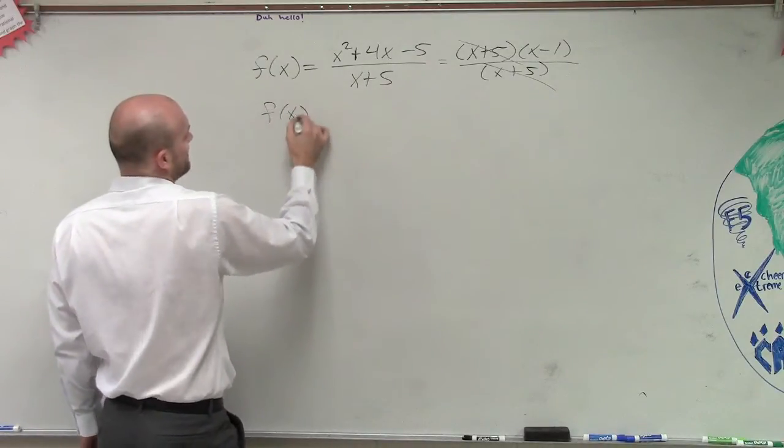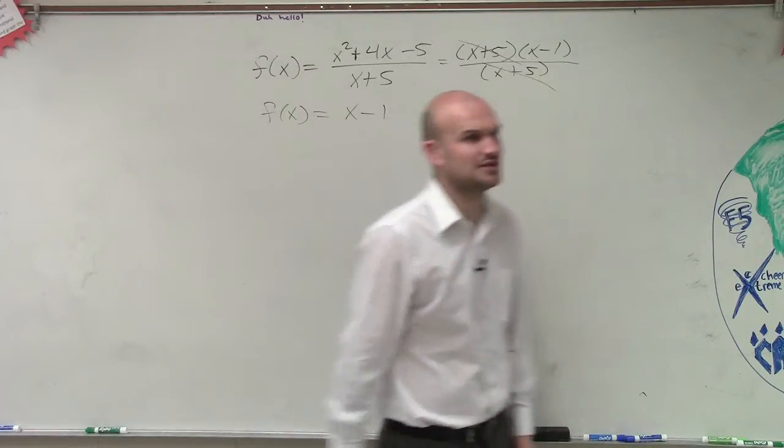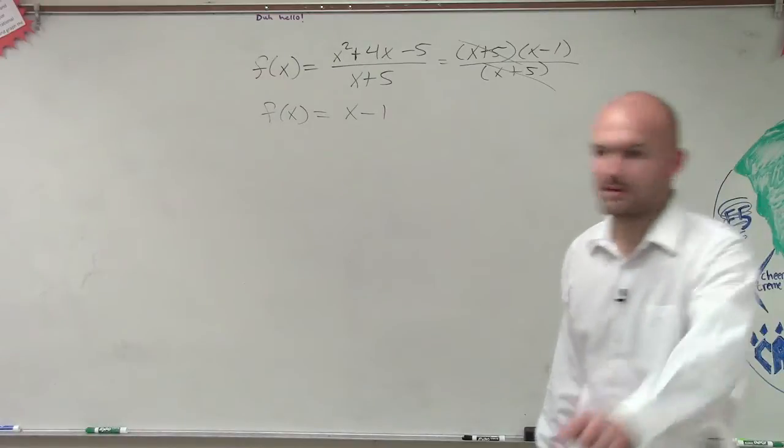So what that's saying is my function graphed is not going to be something crazy, but it's actually going to be just a linear equation. f of x equals x minus 1, black box.